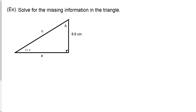First example: solve for the missing information in the triangle. We have a right triangle — I know it's a right triangle because of the square in the corner indicating that. Because it's a right triangle, we can use things like the Pythagorean theorem and the six trig functions we've learned. The Pythagorean theorem can't be used right off the bat because we need at least two sides to determine the third, so we need to use some trig functions.